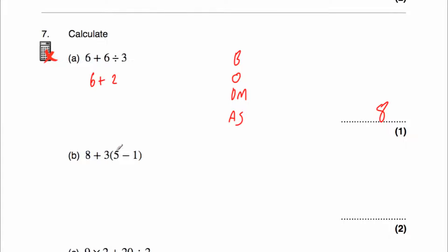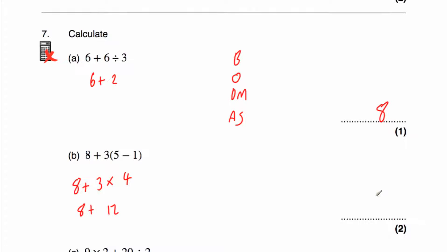Question 7b: 8 plus 3(5 minus 1). A number in front of a bracket means you multiply what's inside by that number. So we do brackets first: 5 take away 1 is 4. Then we have 8 plus 3 lots of 4, so 3 times 4. That multiplication gives 12. Then 8 plus 12 is 20. Our answer is 20.